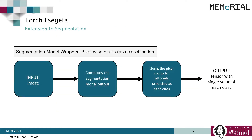These methods work by default with classification models. To work with segmentation models, a model wrapper has been used here, where the input image is supplied to the model and the model provides the segmentation output. The pixel scores for all pixels predicted as each class are summed to generate a tensor with a single value for each class, and this is the output of the model wrapper.